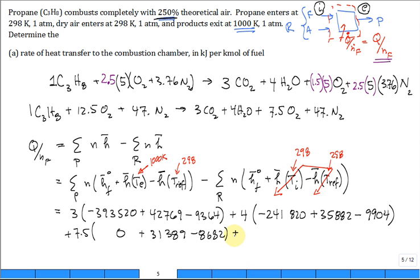Plus the number of moles of nitrogen in the products, 47, times zero for the enthalpy of formation of the nitrogen, plus the enthalpy at the elevated 1000 Kelvin, minus evaluated at 298. We finished the sum over all the products.